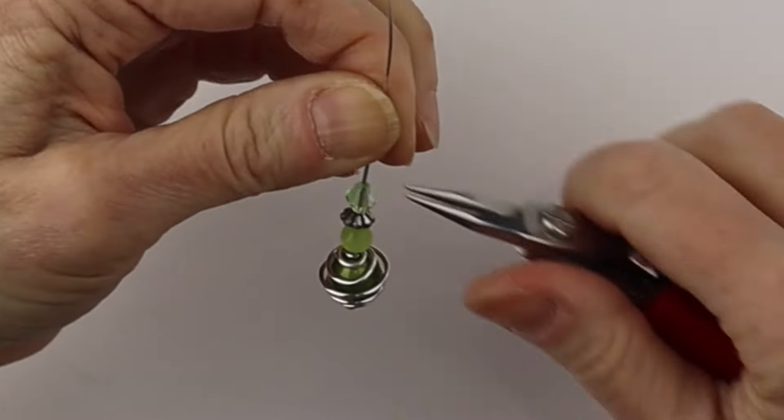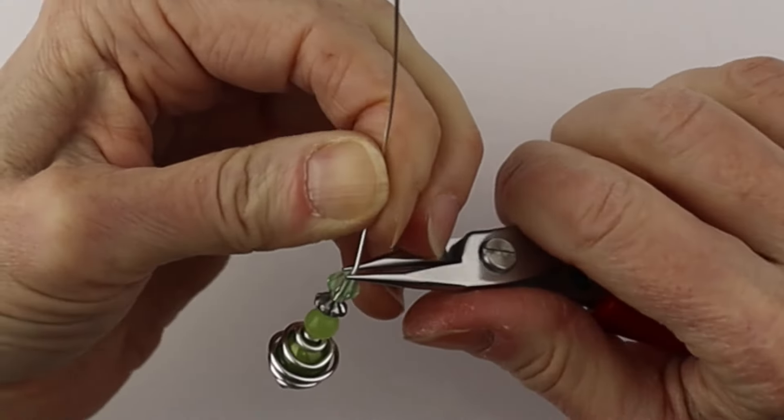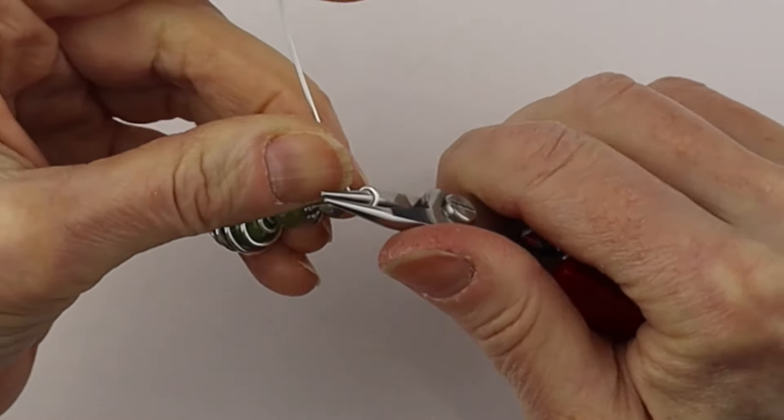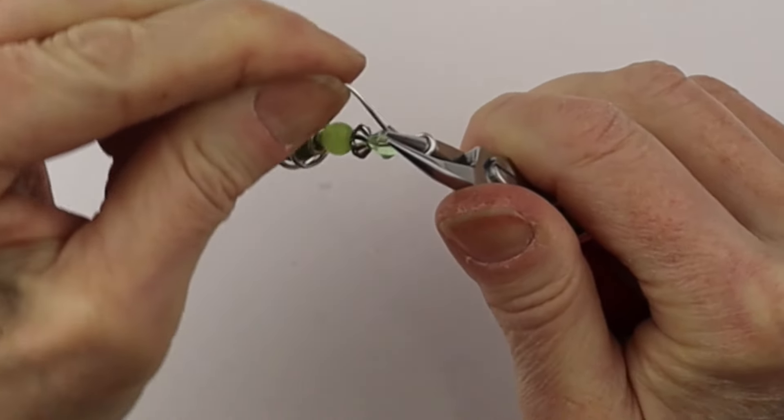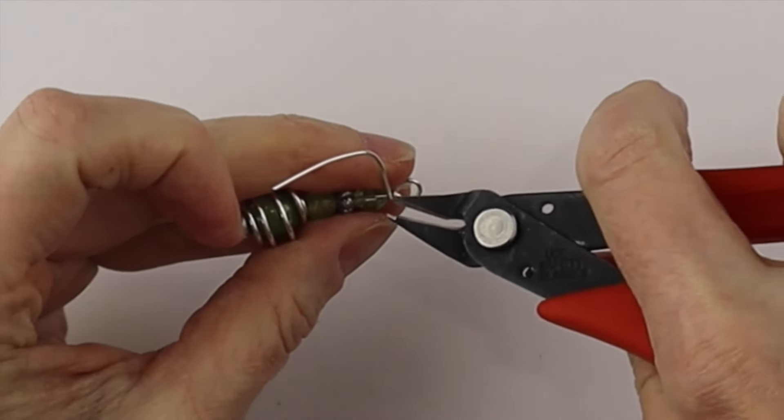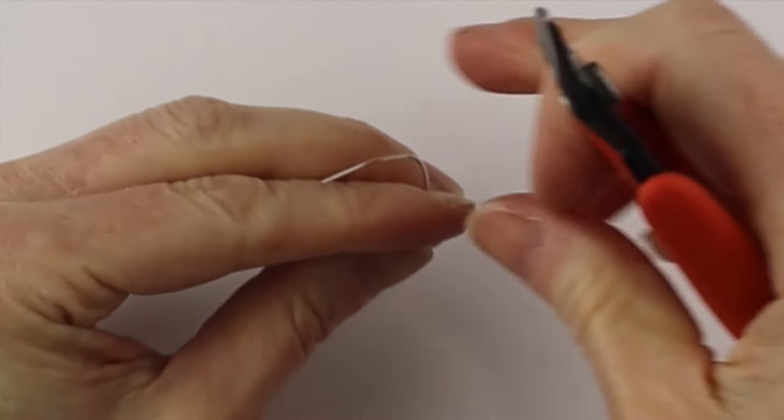Hold it firmly and bend that end around with your round pliers. Form a loop and wind it around so the beads are snug. Give it a clip with the flush cutters.